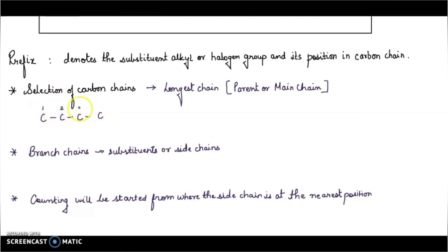One, two, three, four — this has a single bond, that is alkane, and it has four carbons, so that is butane. When there are four carbon atoms it is called 'but' and a single bond gives '-ane'. I haven't attached the hydrogens; we are just focusing on the longest chain right now.